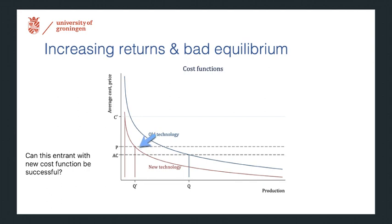In other words, this new entrant will not be successful unless they can get enough funding to reach point Q star. So that's another example of how you might get an investment trap.